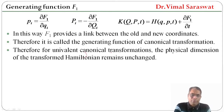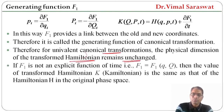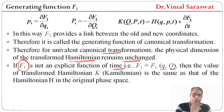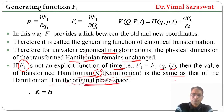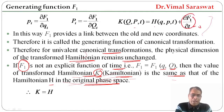For univalent canonical transformation, the physical dimension of the transformed Hamiltonian remains unchanged. If F1 is not an explicit function of time — that is, F1 is a function of q and capital Q only — then the value of the transformed Hamiltonian K equals the Hamiltonian H in the original phase space. This means that if del F1/del t equals zero, then K equals H: the old and new Hamiltonians are the same.